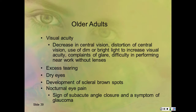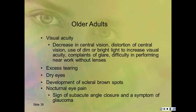If someone loses vision in just one eye in midlife, think of multiple sclerosis until proven otherwise. Especially with monocular vision loss—when you do an Amsler grid and it shows central vision loss—that's MS until proven otherwise.